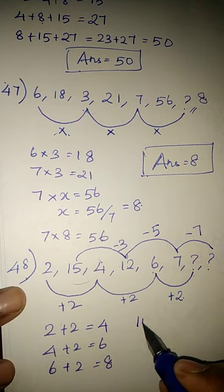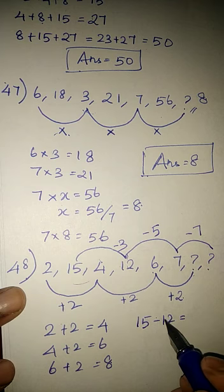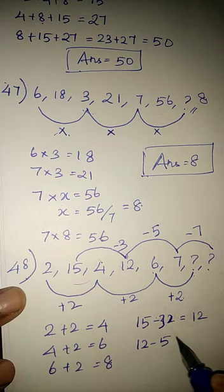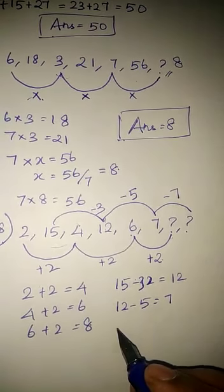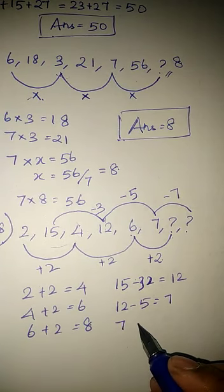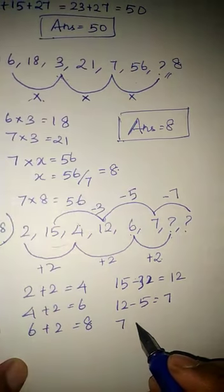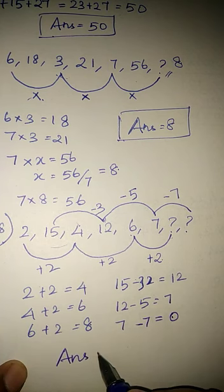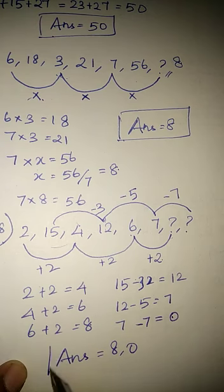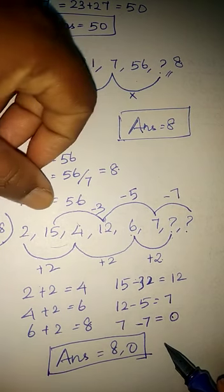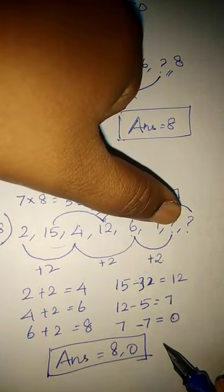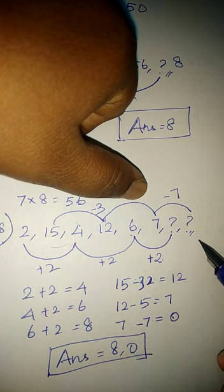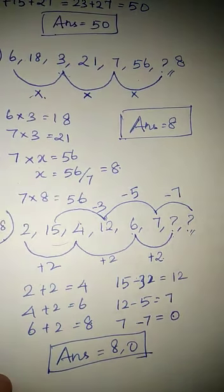Next one: 15 minus 3 gives 12, 12 minus 5 gives 7. Then 7 minus 7 gives 0. Hence the answer is 8 comma 0. There is also a different method. By adding plus 2, you are getting here as 8. By subtracting minus 5, minus 3, and minus 7, you are getting answer here as 0.